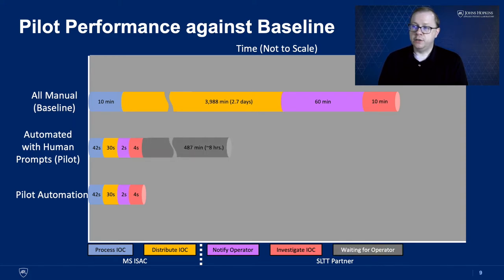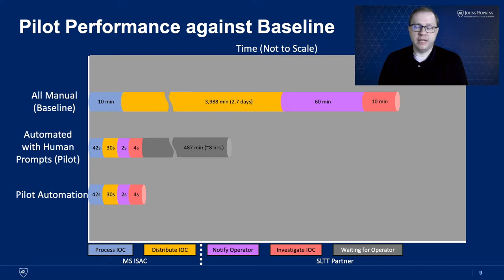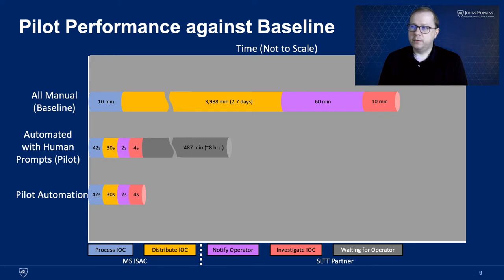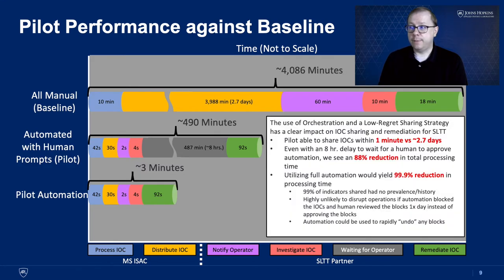Some of our pilot partners allowed the automation to go in full auto mode; others wanted to definitely have a human in the loop before any block was initiated. Being a pilot on production networks, that's a very understandable approach. What we saw was that when you did put the human in the loop, eventually that led to a queue building up and roughly an 8-hour delay before any block was taken — essentially, once a shift somebody would look at the whole batch of indicators and decide which ones to block. Once that decision is made, the automation can process those blocks in about 92 seconds on average, versus a manual 18-minute process. Looking at the entire timeline, it's pretty dramatic — going from about 4,086 minutes to as little as 3.